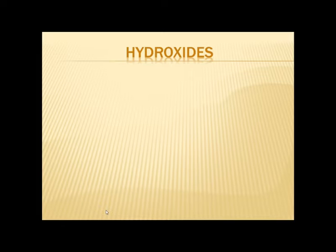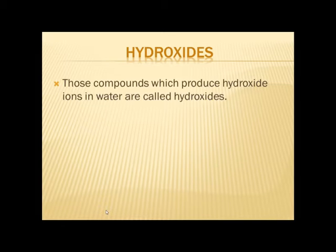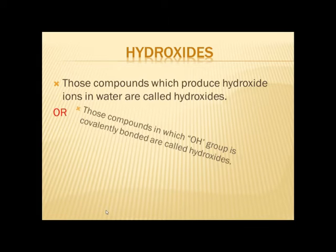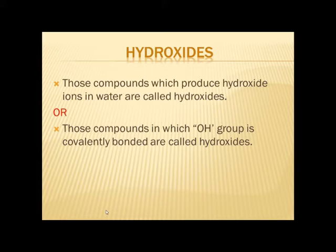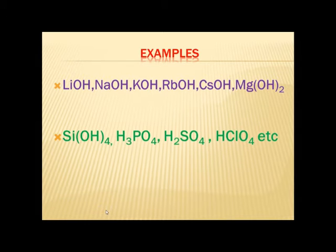First we should know about hydroxides. Hydroxides are those compounds which produce hydroxide ions in water, or those compounds in which an OH group is attached within a compound through a covalent bond. These are the examples based on the first definition of hydroxides, while the rest of the examples are based on the second definition.